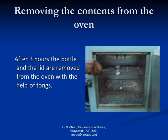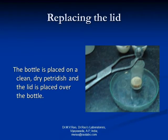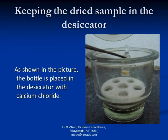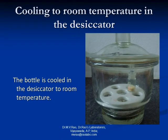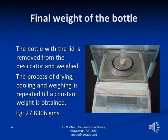After three hours of drying, the bottle and lid are removed from the oven with the help of tongs. The bottle is placed on a clean dry Petri dish and the lid is placed over the bottle. The bottle is then placed in the desiccator over calcium chloride and cooled to room temperature. The bottle with lid is removed from the desiccator and weighed. The process of drying, cooling and weighing is repeated till a constant weight is obtained. The final weight in this case is 27.8306 grams.